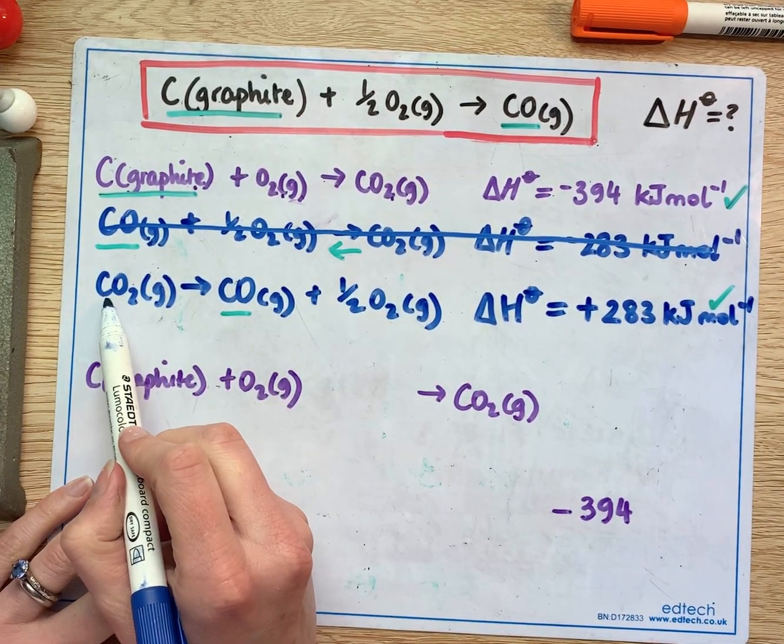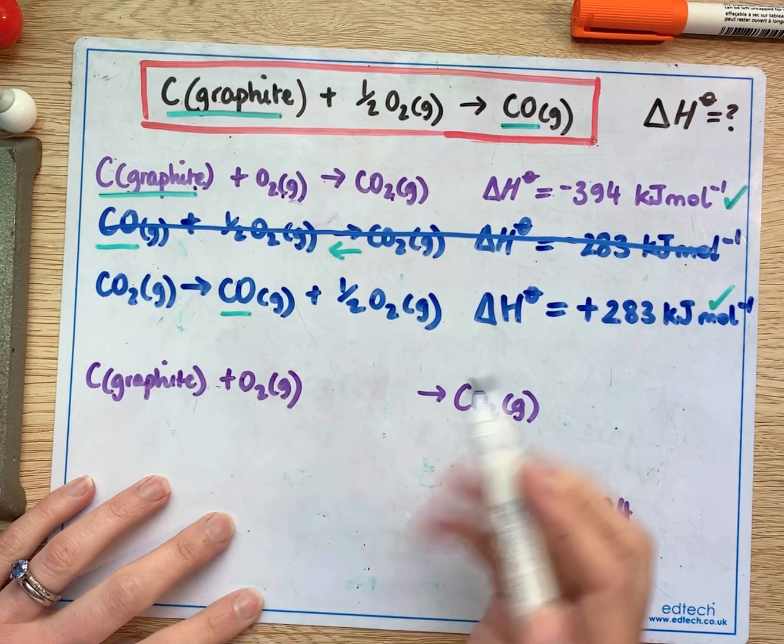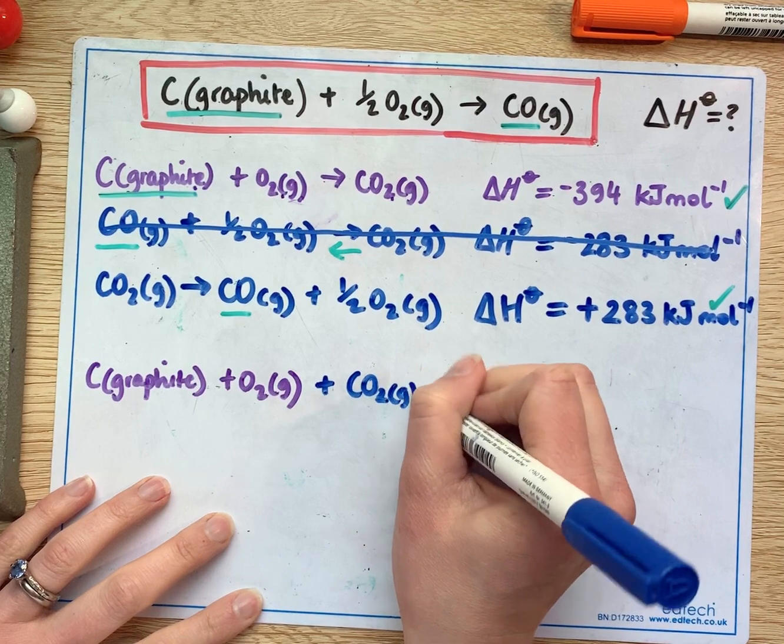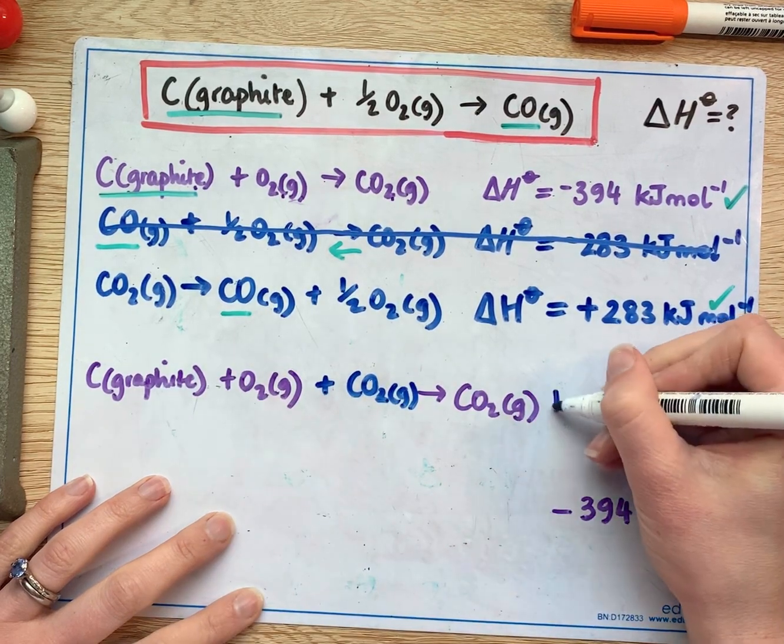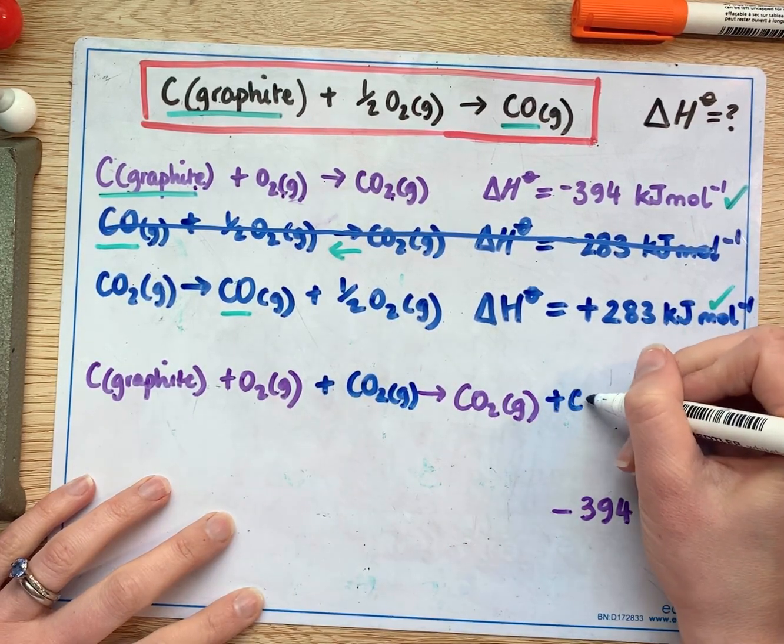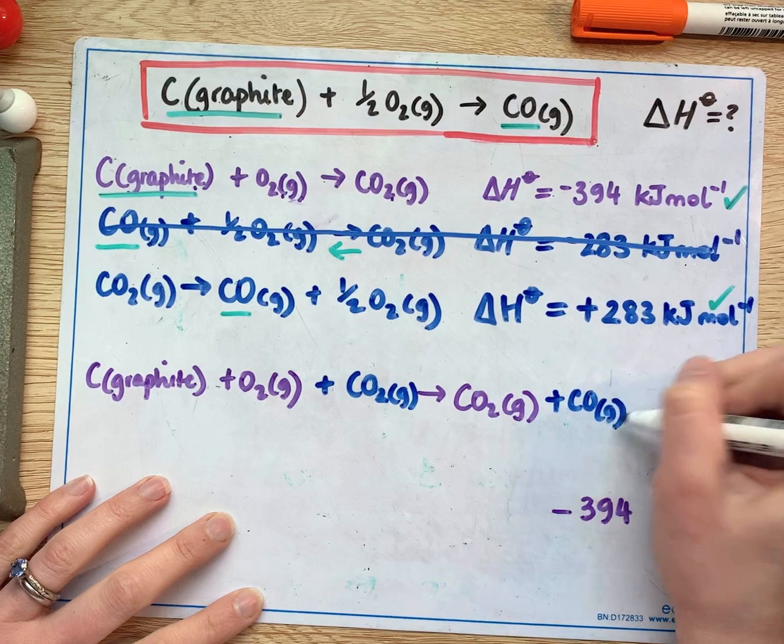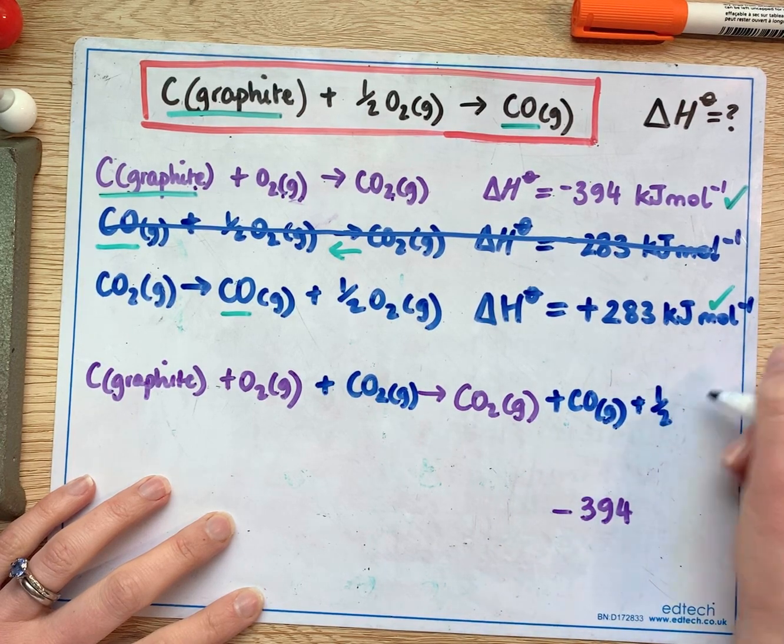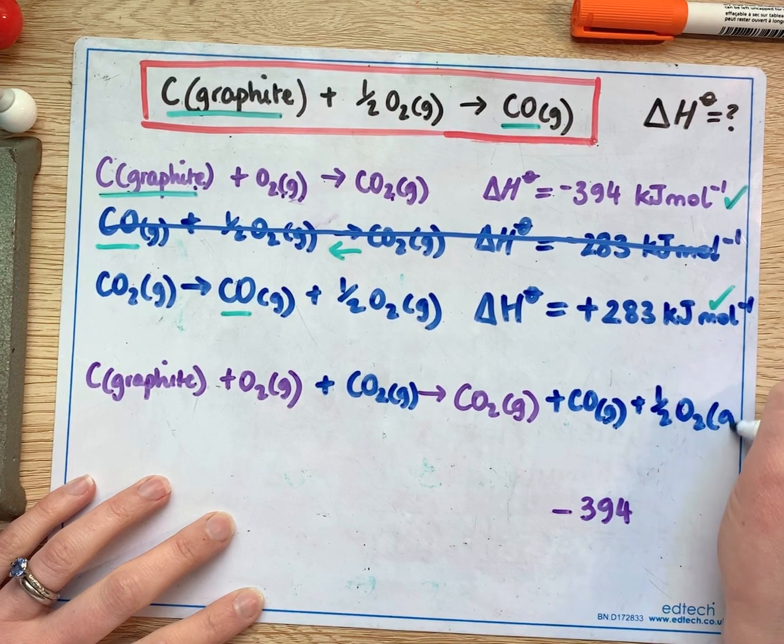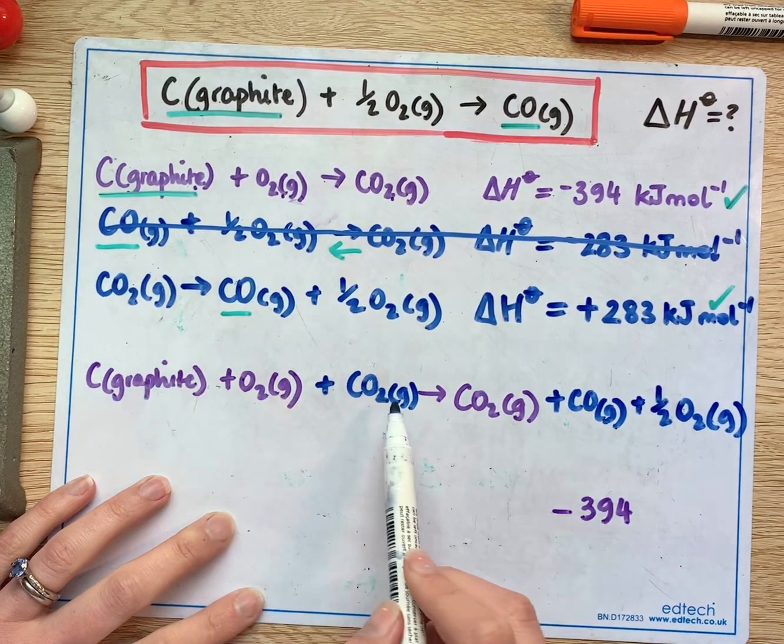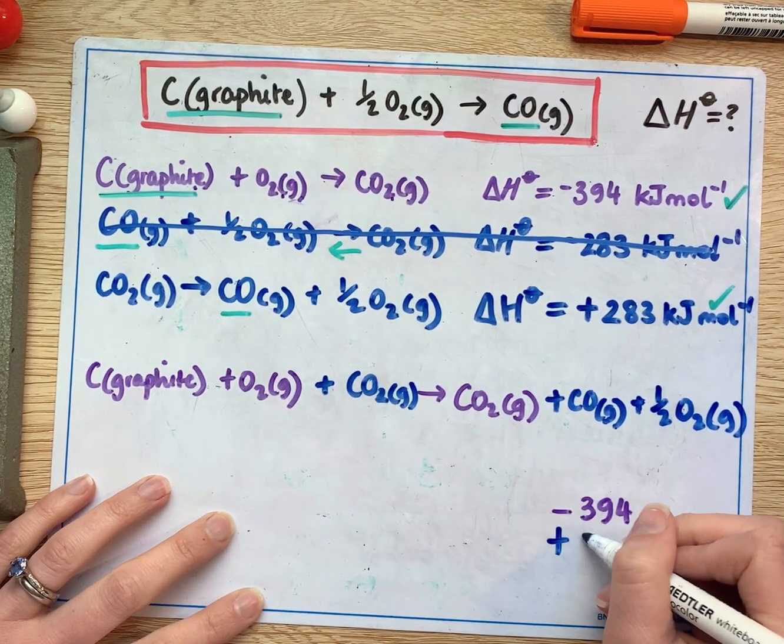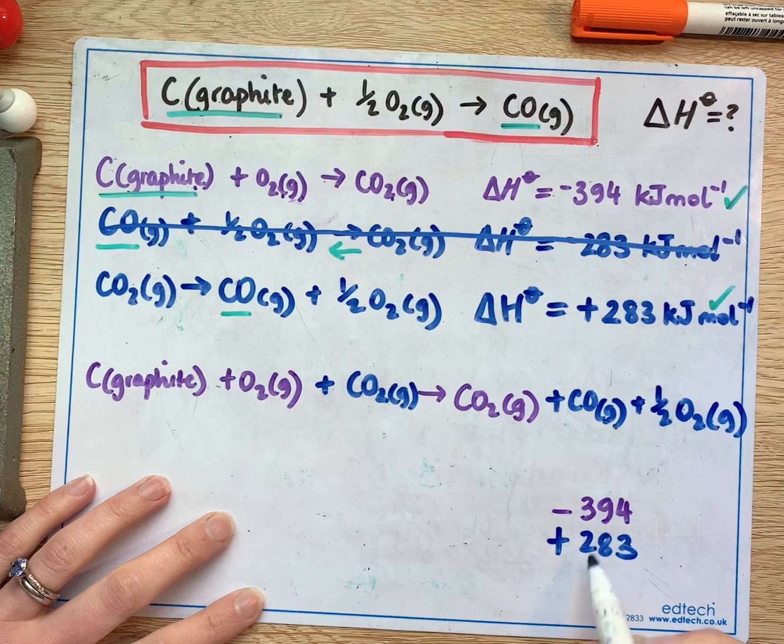I'll use this one now here, reactants and write it on the reactant side of the equation and products. So I've written here reactant and products and that was positive 283 kilojoules per mole.